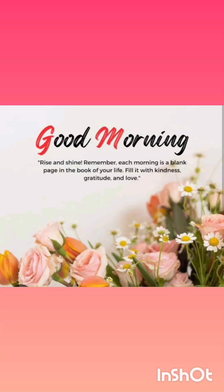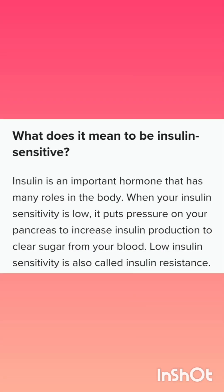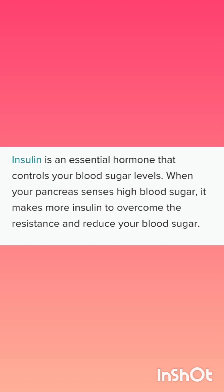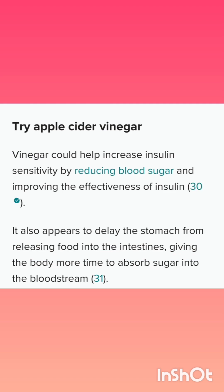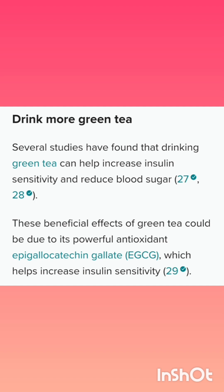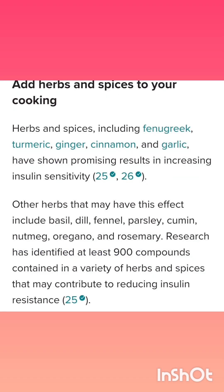Fiber-rich vegetables like bitter gourd, ridge gourd, bottle gourd, and pumpkin are very great foods that truly help to reduce blood glucose levels. It is clinically proven that bottle gourd highly reduces blood glucose levels, so take it in more quantity. Snake gourd, which many people avoid, is also very beneficial to reduce blood glucose levels.